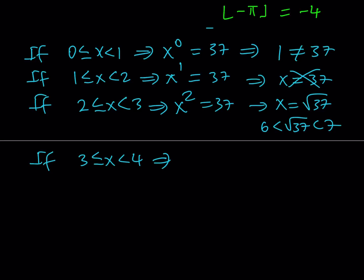If x is between 3 and 4, the floor value is going to be 3, and we're going to get this equation, and this implies that x is equal to the cube root of 37. Now, let's think about it. Is x between 3 and 4? That's what we need to check, right?